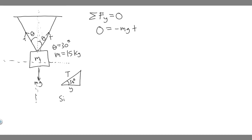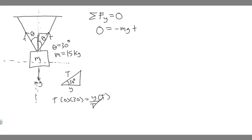To find the y-component, we take the cosine of the angle. Cosine equals adjacent over hypotenuse — SOH-CAH-TOA — so cosine of 30 equals y over T. Multiplying both sides by T gives us y equals T times cosine of 30. That's the vertical component of one tension. But keep in mind, these are identical on each side, so the total vertical tension contribution is 2T times cosine of 30.